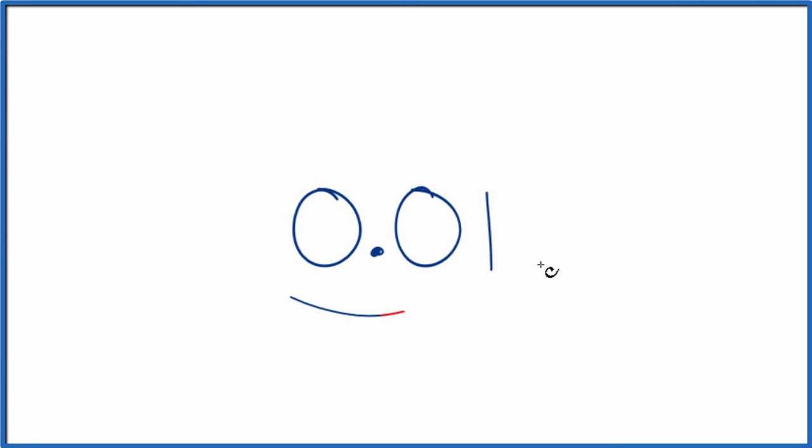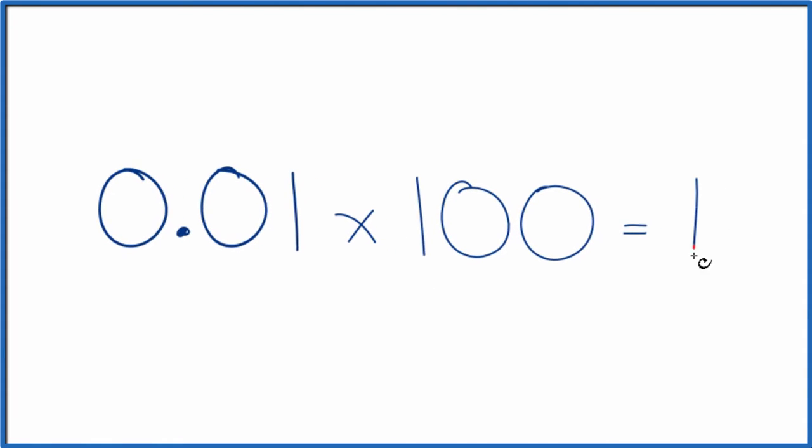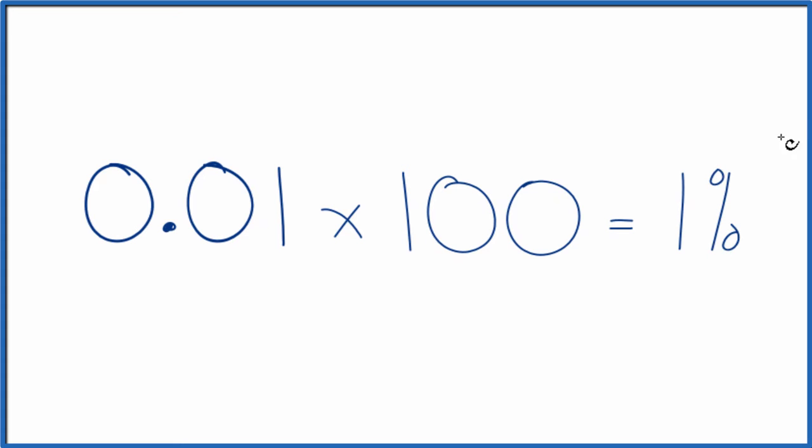Let's convert the decimal 0.01 to a percent, and I'll show you two ways that we can do that. The first, we just multiply 0.01 times 100. When we do that, we get 1, which is 1%. So that's the first way.